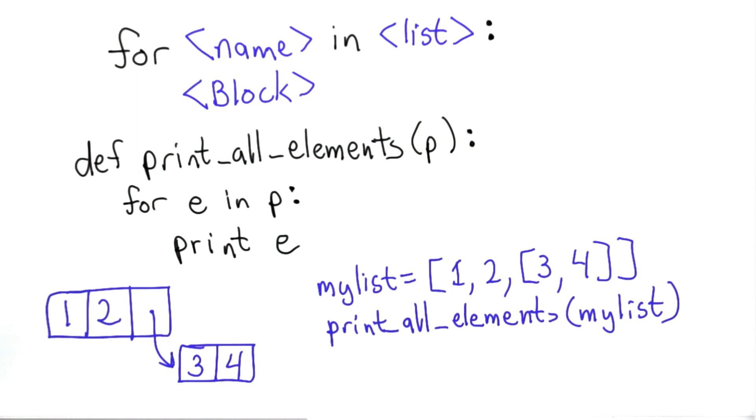When we pass that to print_all_elements, the variable p will refer to that object. When we execute the loop, what happens is the variable e is assigned to the first element of p. So initially, e will refer to this value. We execute the body of the loop with that as the value of e. So that will print out the value 1.